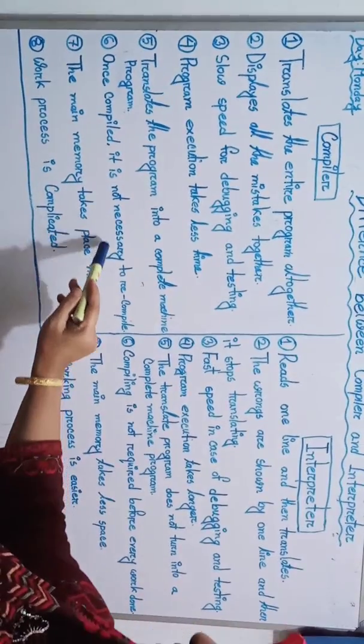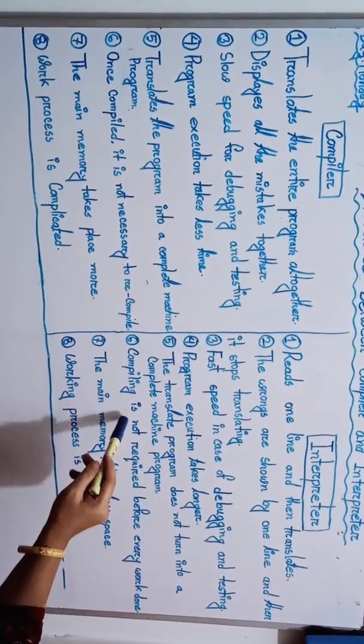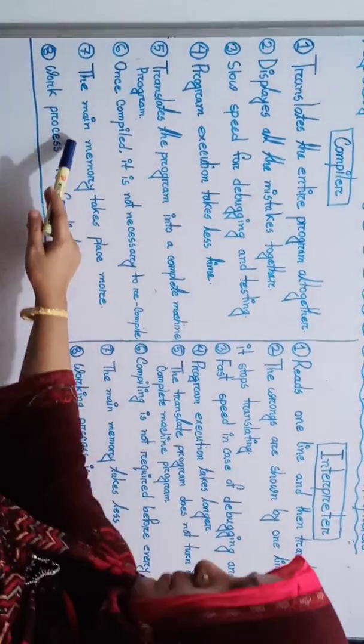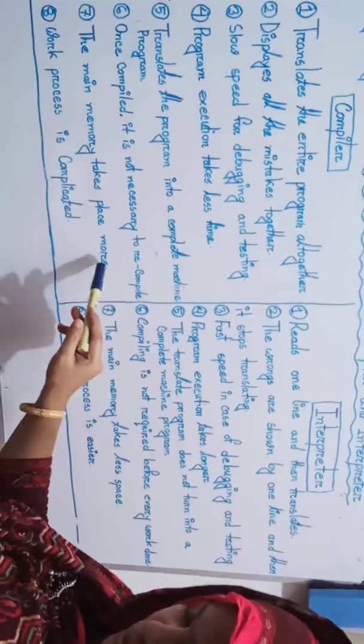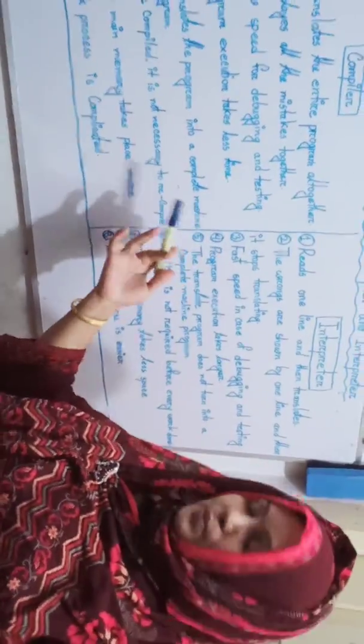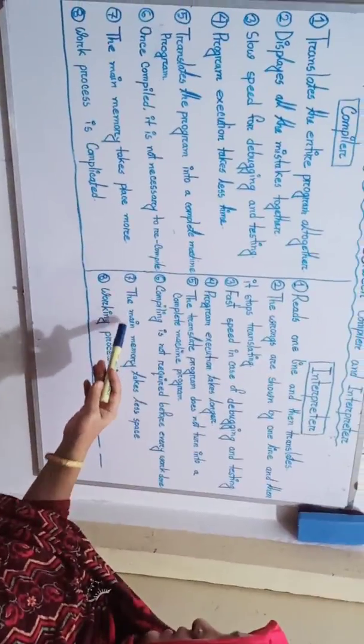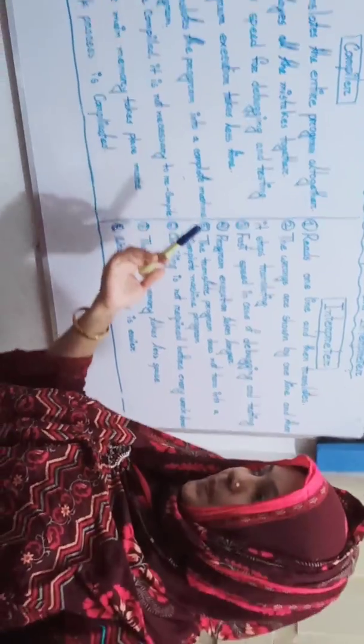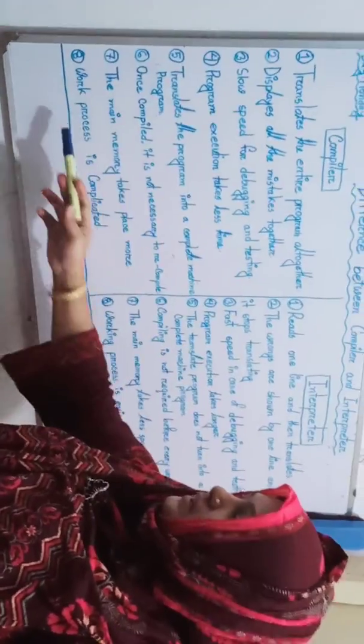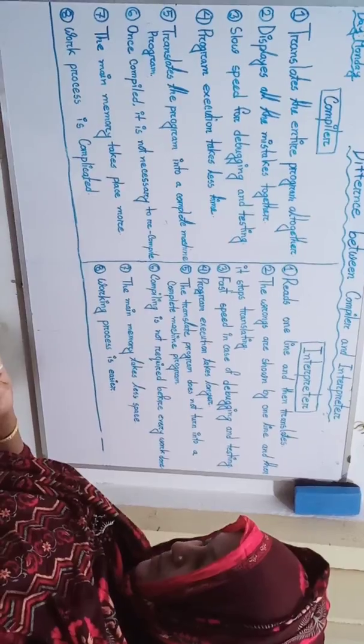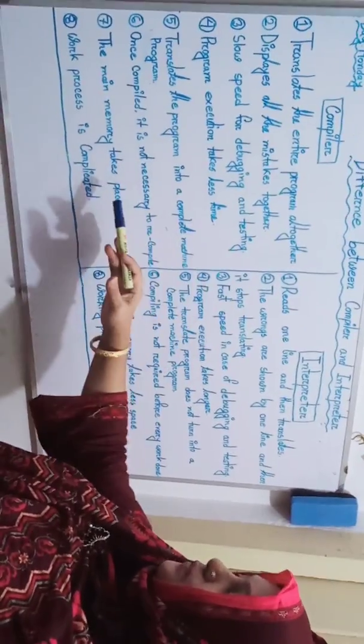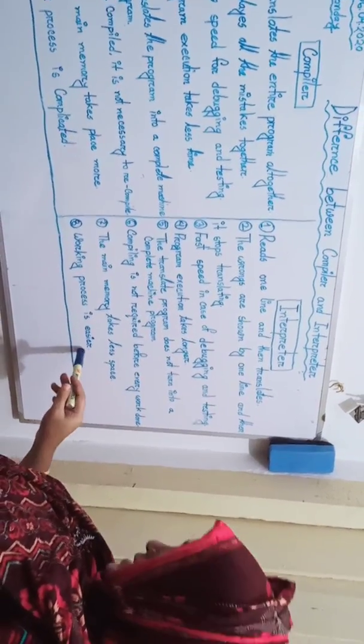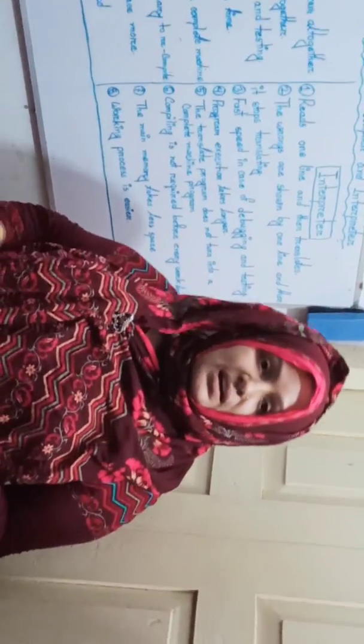Number six: Once completely compiled, it is not necessary to recompile; compiling is not required before every work done. Number seven: In compiler, the main memory takes more space, that means memory requirement is more. Number seven: In interpreter, the main memory takes less space, memory required is less. Number eight: Compiler work process is complicated, that means error detection is difficult. Interpreter number eight: Working process is easier, that means error detection is easier.